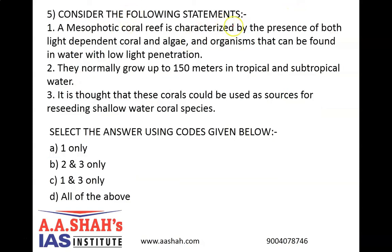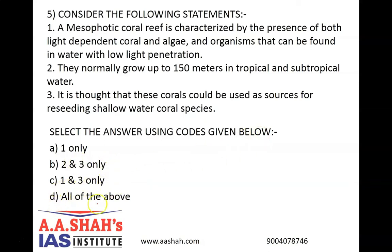Question number 5. Consider the following statements. 1: A mesophotic coral reef is characterized by the presence of both light-dependent coral and algae, and organisms that can be found in water with low light penetration. 2: They normally grow up to 150 meters in tropical and subtropical water. 3: It is thought that these corals could be used as sources for reseeding shallow water coral species. Select the answer using the codes given below. A: 1 only, B: 2 and 3 only, C: 1 and 3 only, or D: all of the above.